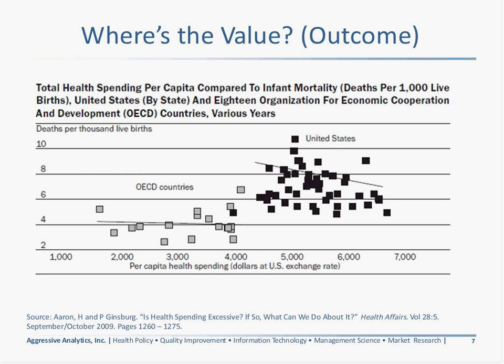Another chart looks at an outcome measure — infant mortality per 1,000 live births — comparing the United States and individual states with OECD countries, the 34 peers in the world representing the Organization for Economic Cooperation and Development. While within the U.S. there is some relationship between higher payment and better outcomes, when we compare ourselves to the rest of the world, we're twice as bad in terms of outcomes and we spend twice as much as well.